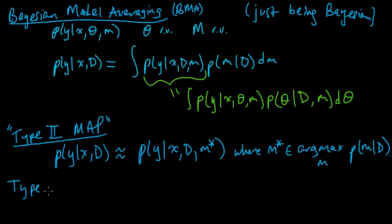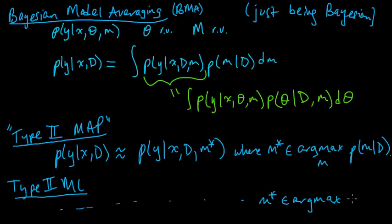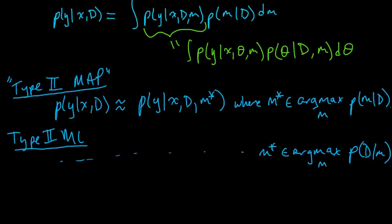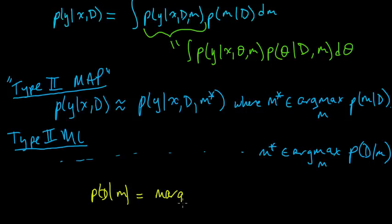Type 2 maximum likelihood is when you do the same thing, but M star is the arg max of the probability of the data given the model, and this is called type 2 maximum likelihood. The probability of the data given the model is a sort of likelihood function — by analogy with the likelihood function, the probability of the data given the model is called the marginal likelihood.